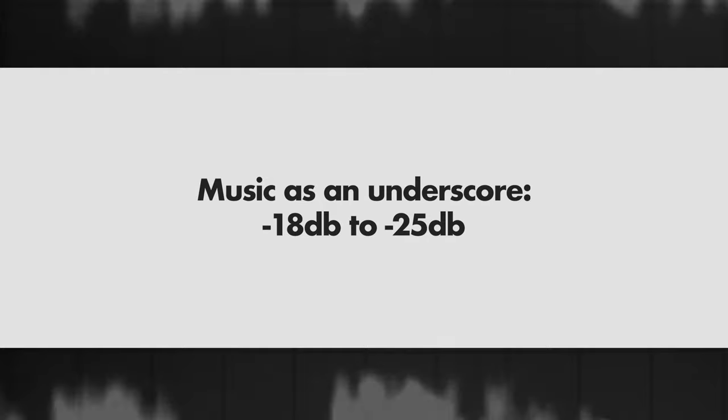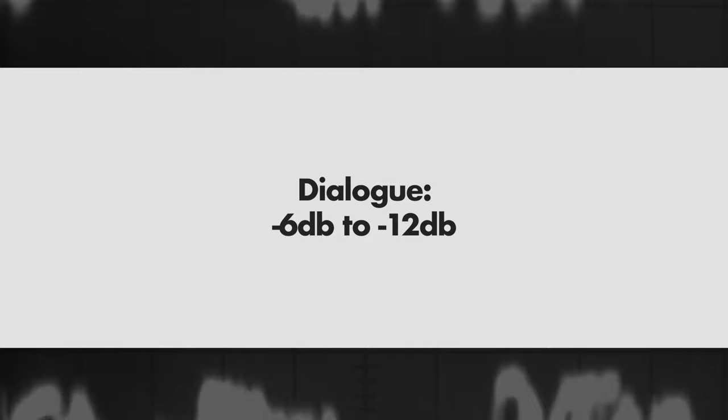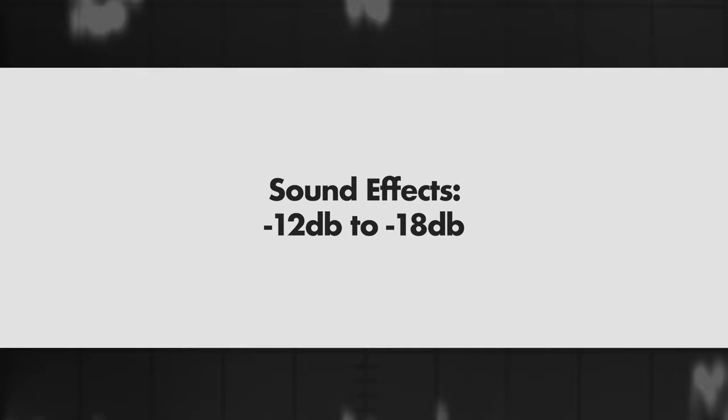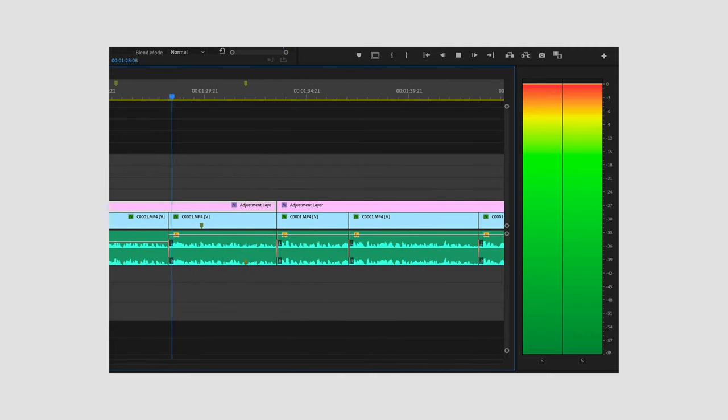For your music levels — anything used as an underscore for your film — you want to set that between -18 dB and -25 dB. For your dialogue, you want that between -6 dB and -12 dB. For your sound effects, you want that between -12 dB and -18 dB. Your overall mix should end up somewhere between -3 dB and -6 dB. The general rule is to get it close to zero decibels, but never exceed zero decibels — anything above this is clipping and could hurt your viewers' ears.